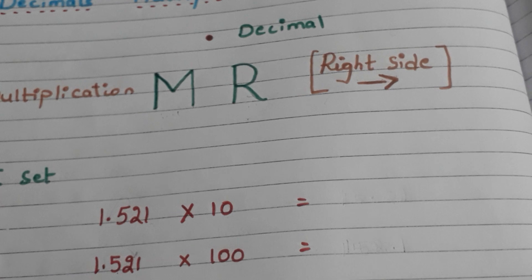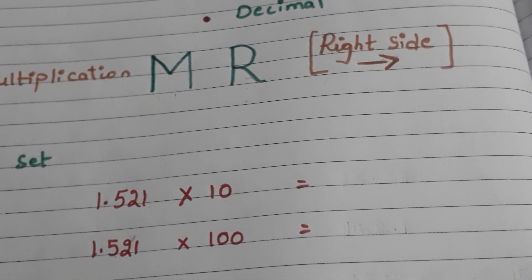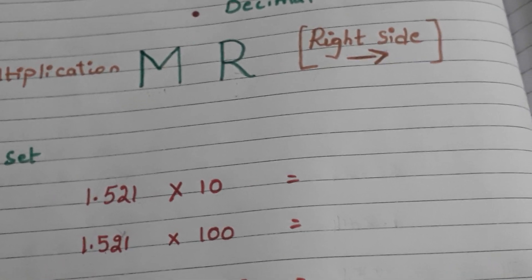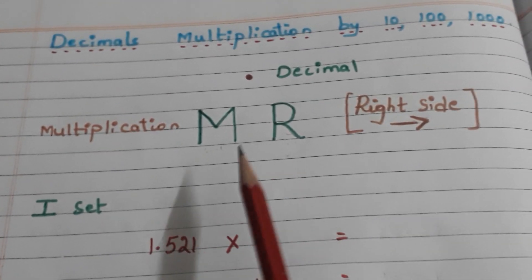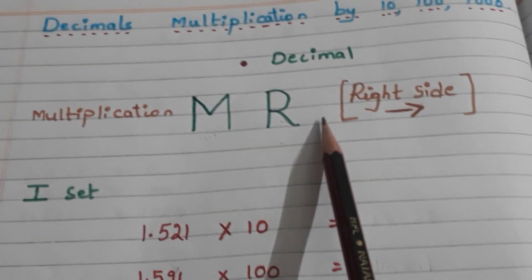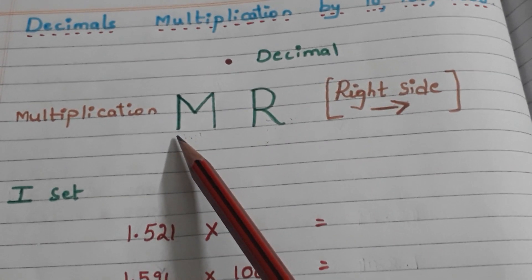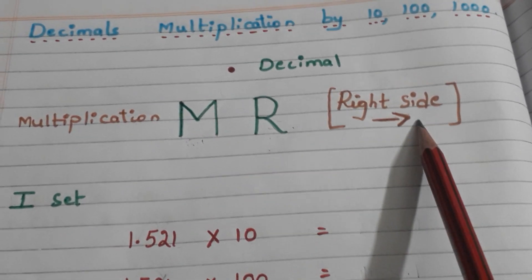Today I am going to give a simple shortcut to the children so that they can easily remember and sort out the problem. Let us see what is that. Here I am giving MR. M means multiplication, R means right side. In multiplication we are moving the decimal to the right side.